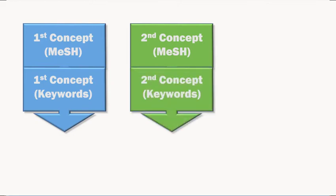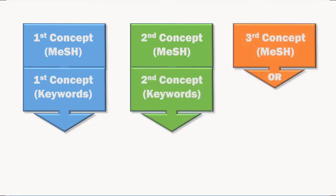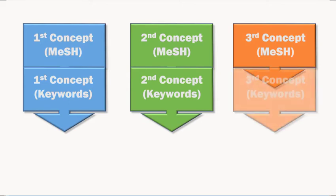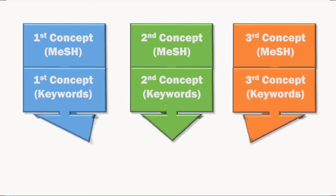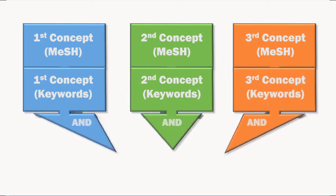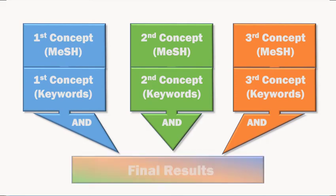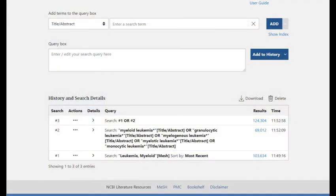The next building block consists of MeSH and keyword searches for all the remaining concepts in our research question. Once we have all the blocks in place, we can combine them with the Boolean operator AND to get our final list of results. To proceed with the next building block in our literature search, let's move on to the next concept of risk factors.